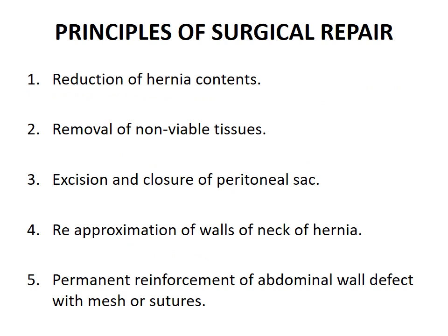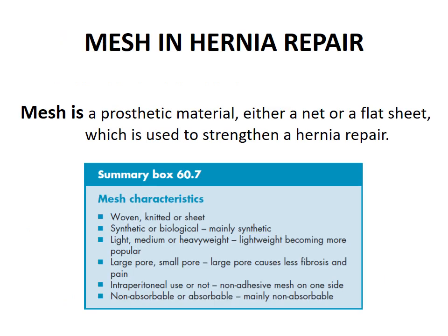Principles of surgical repair of hernia: (1) reduction of hernia contents, (2) removal of non-viable tissues, (3) excision and closure of the peritoneal sac, (4) re-approximation of the walls of the neck of the hernia, (5) permanent reinforcement of the abdominal wall defect with mesh or sutures. Mesh is a prosthetic material — either a net or a flat sheet — used to strengthen a hernia repair.